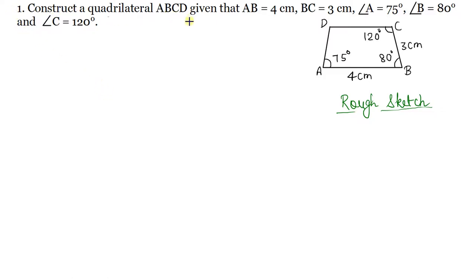Construct a quadrilateral ABCD given that AB is equal to 4 cm, BC is equal to 3 cm, angle A is 75 degrees, angle B is 80 degrees, and angle C is 120 degrees.